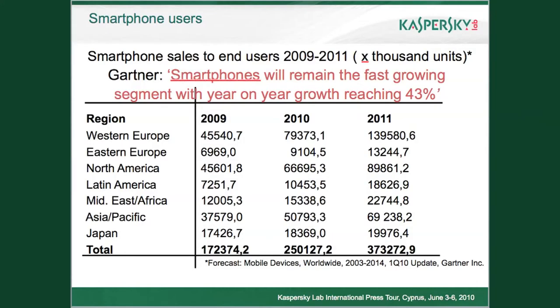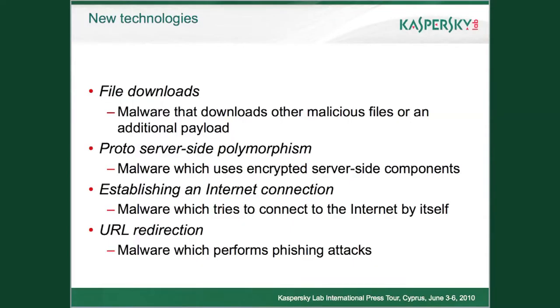People always want to be online — to use Facebook, to use Twitter, to do online banking via smartphones. According to Gartner, smartphones will remain a fast-growing segment and the number of smartphones will continue to grow. Cybercriminals will gain new opportunities for earning money illegally, and different types of mobile malware started to use the internet to accomplish these aims.